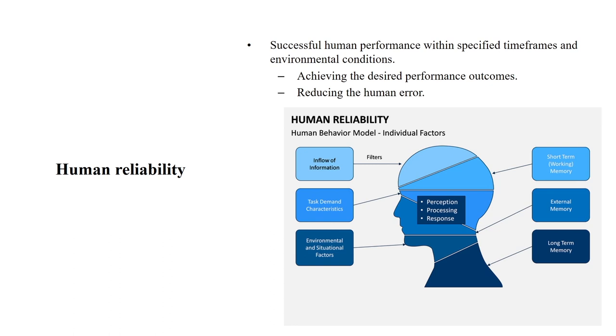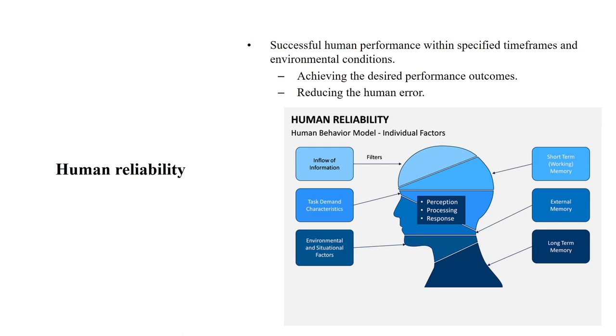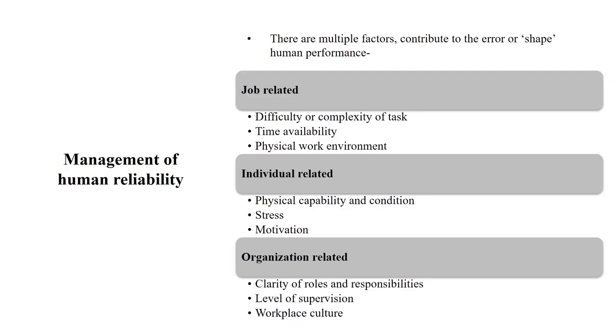The same situation may happen on a workshop floor or in an assembly line. Suppose there is an assembly line going on and a wrong product comes in — how do you make the decision and eliminate it? Those are environmental and situational factors. All these things are also related to short-term memory, external memory, and long-term memory. All these factors are influencing factors that create the human behavioral model. That is the background of human reliability.